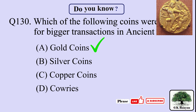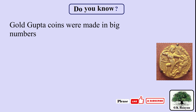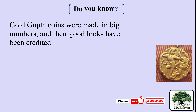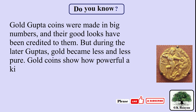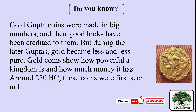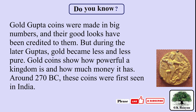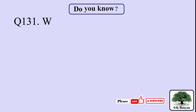The right answer is A. Gold coins. Gold Gupta coins were made in large numbers and are credited for their good looks, though during the later Guptas, gold became less and less pure. Gold coins show how powerful a kingdom is and how much wealth it has. Around 270 BC, these coins were first seen in India.